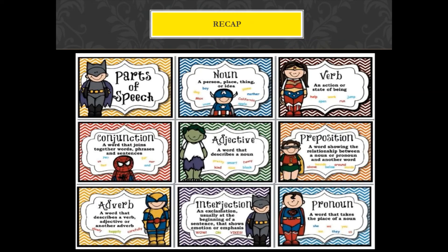Let's recap. There are eight parts of speech: Noun — a person, place, thing, or idea. Verb — an action or state of being. Conjunction — a word that joins together words, phrases, and sentences. Adjective — a word that describes a noun. Preposition — a word showing the relationship between a noun or pronoun and another word. Adverb — a word that describes a verb, adjective, or another adverb. Interjection — an exclamation usually at the beginning of a sentence that shows emotion. Pronoun — a word that takes the place of a noun.